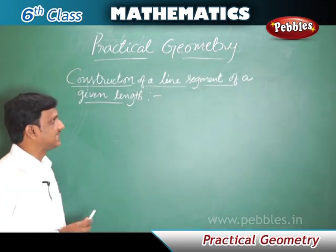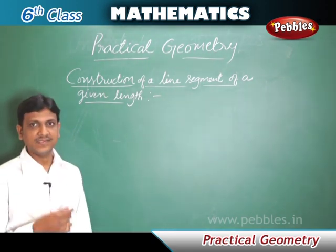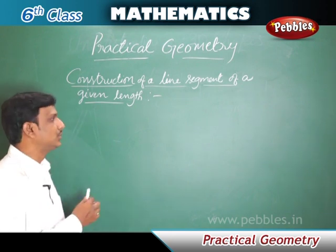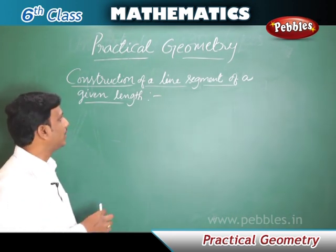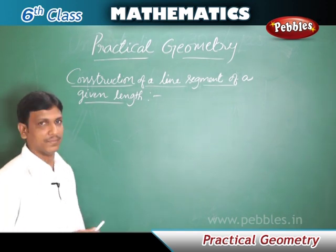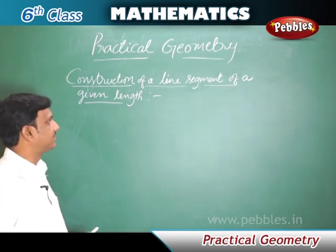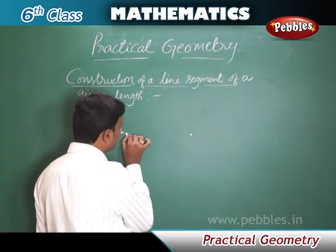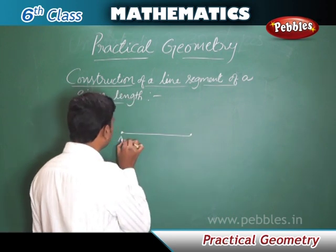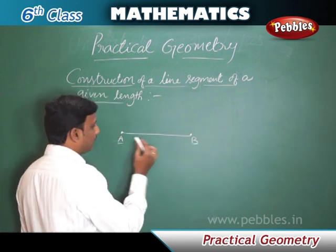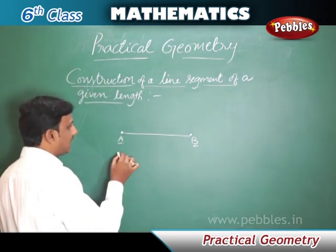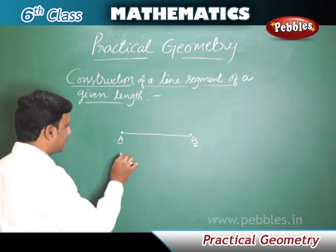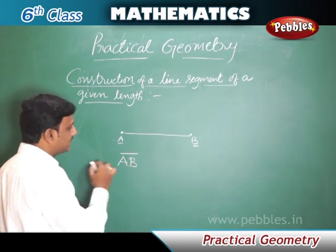Construction of a line segment of a given length. In this lesson, we will learn how to construct a line segment using geometrical instruments. We already know what a line segment is from earlier chapters. A line segment is the least possible distance between two given points — for example, points A and B.